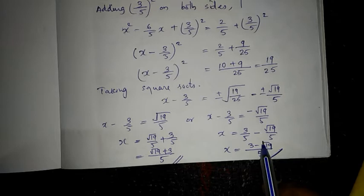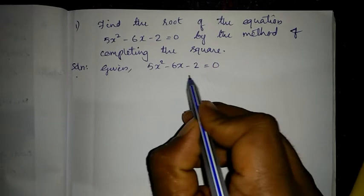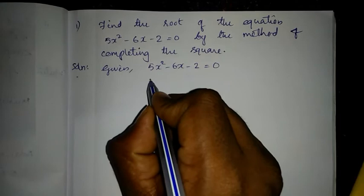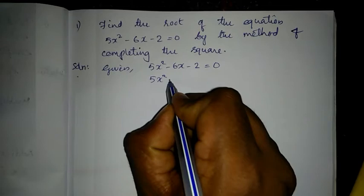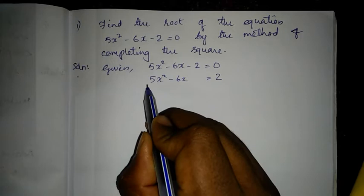Now let us do the same question using a different method — Method 2. First, write the given equation. Same as before, take the constant to the right hand side: 5x² minus 6x = 2. After this, check out the coefficient of x². The coefficient of x² should always be a perfect square number.